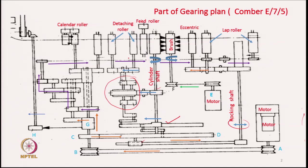The drive given to the cleaning roller — the brush — comes from an independent motor E, which through pulleys drives the brush roller. The brush roller has brush on its surface that cleans the needles of the cylinder comb. The brush turns at a constant speed depending on the motor speed and the diameter ratio of the two pulleys. The motion path is from the motor to pulley F, which is mounted on a shaft on which all the brush rollers are also mounted.